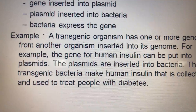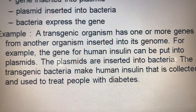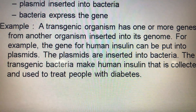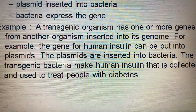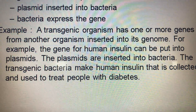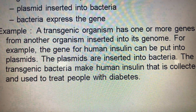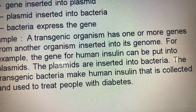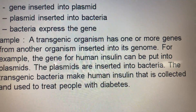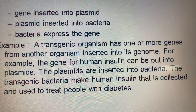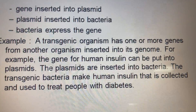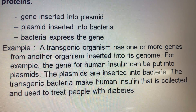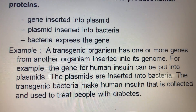One example of using this method is using bacteria to make human insulin. Diabetic patients lack the insulin hormone, which is responsible for the absorption of glucose. To make insulin, they use the plasmids of the bacteria and insert into them a gene from a normal human that can produce insulin.